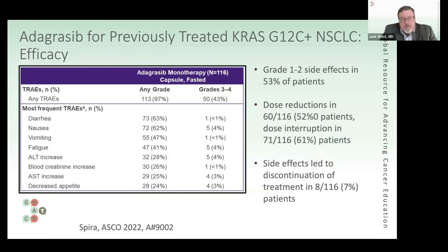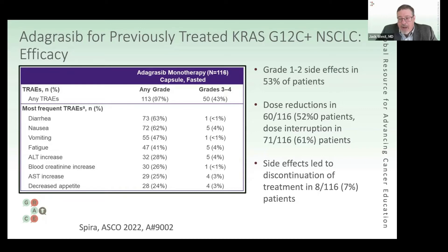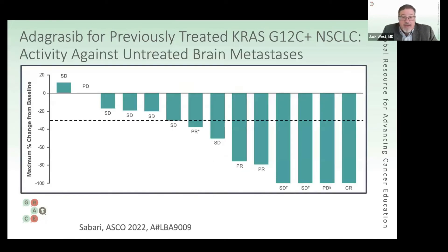I'd raise the point that when analyzing the efficacy of these drugs, we often focus on grade 3 or higher side effects. But these are drugs we intend patients to take for many months or a year or more. Having drugs that cause even modest nausea, diarrhea, or rash gets to people after a while. This is not the same as measuring a chemo that people are on for just a month or two — these are longitudinal therapies, and how tolerable a drug is matters, even if the toxicity isn't necessarily prohibitive.